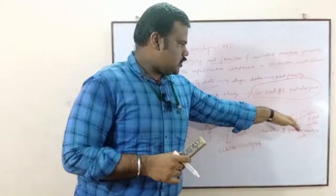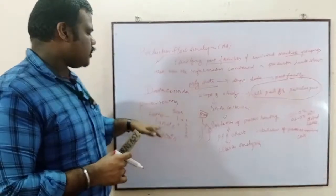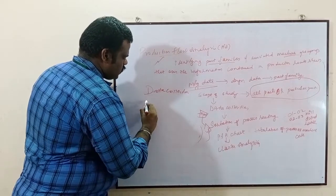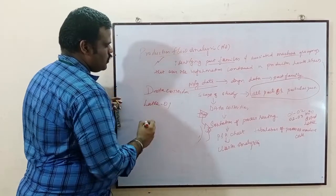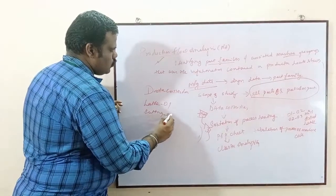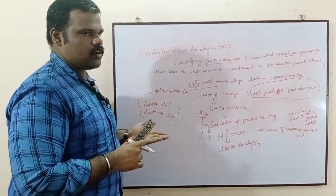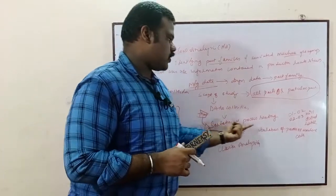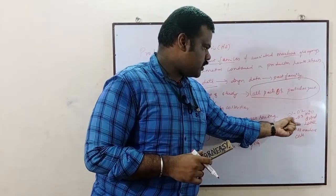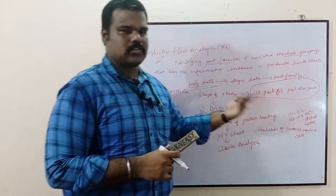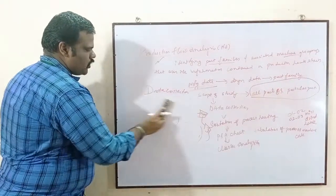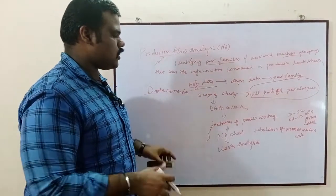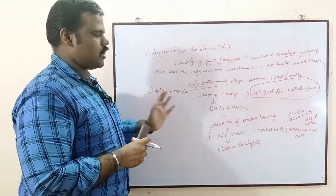In the process routing, the operations will be represented in terms of codes. For example, lathe might be coded 01, cutting might be 02 — a reference chart will be provided. For instance, 01 means mill, 02 means grind, 03 means lathe. You can find this reference chart in the description, on the website, or within this video itself.